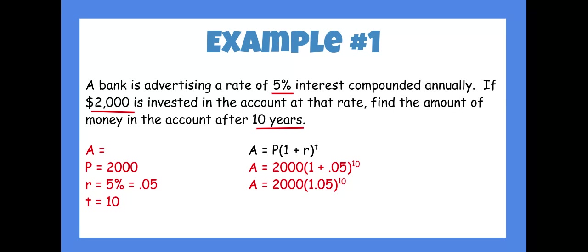Add 1 plus 0.05, you get 1.05. Now plug 2000 times 1.05 to the 10th power in your calculator. To get the 10 as an exponent, you have to use the caret button in the calculator.